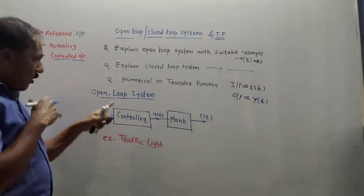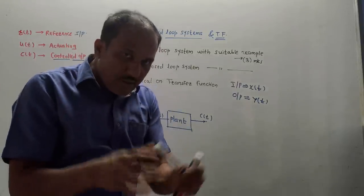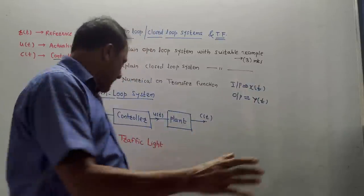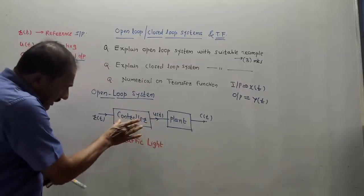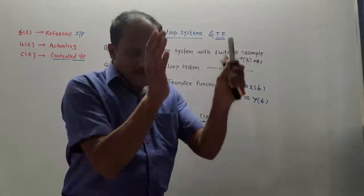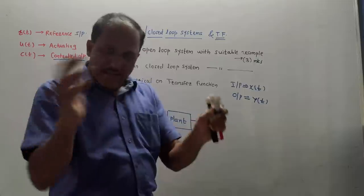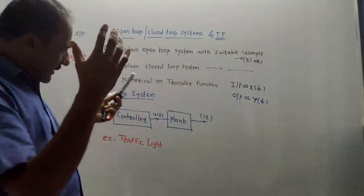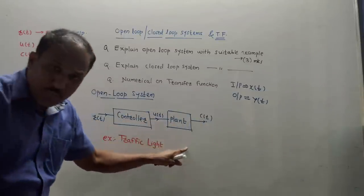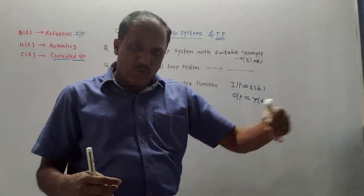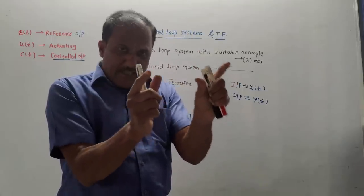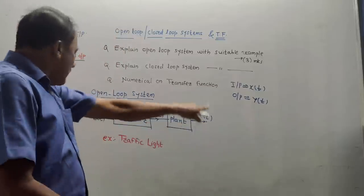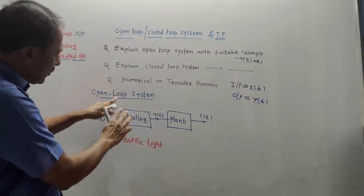This is the block diagram of open loop system. The output depends only on input — output is not changed by taking into consideration some other factors. A good example is a traffic light signal. This controller is the device which decides for how much time period the green light should be on, then made off, and so on. The plant is the actual display of the traffic light — the different colored lights: green, orange, red. This is the open loop system because even if there is no traffic on a particular road, if the red light is on it cannot be changed; it will change only after a predefined time period. So output is dependent only on input which is predefined earlier.